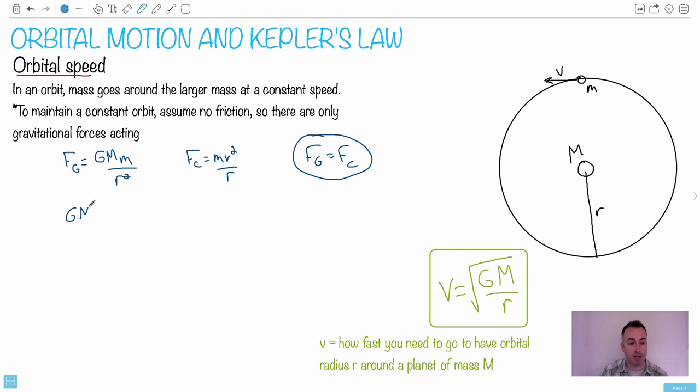In other words, let's put it here: GMm over r squared, that's gravitational, equals mv squared over r. Good news, the m's cancel out. And also I can move my r up here. Can you see that? If you're not sure, I'll just do it: r or r squared.